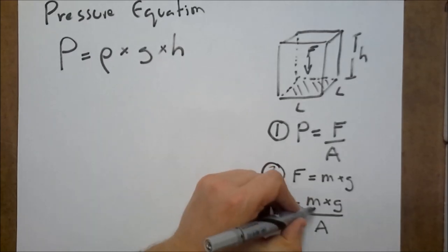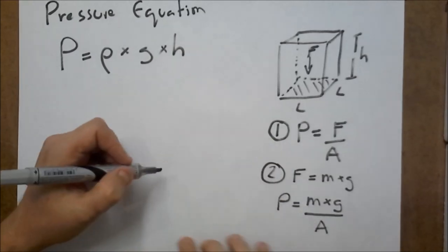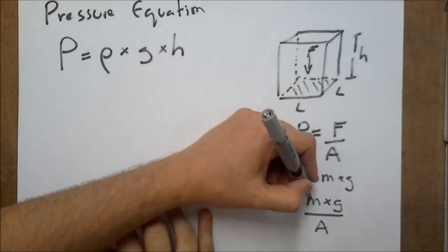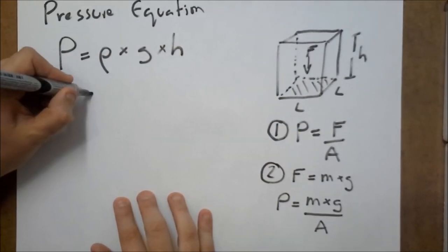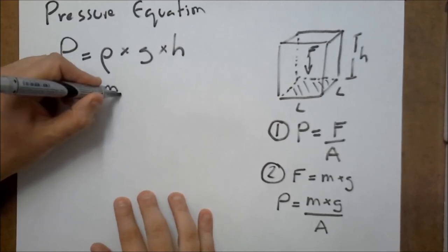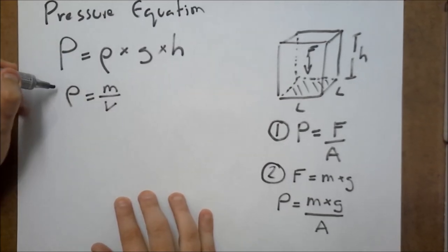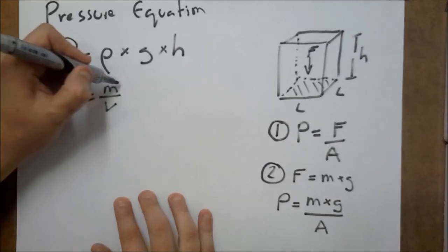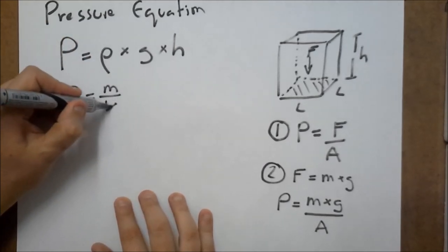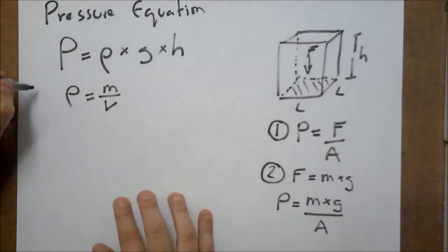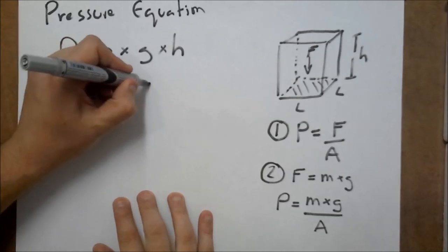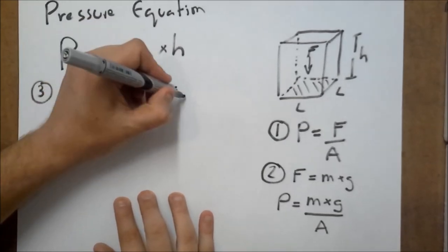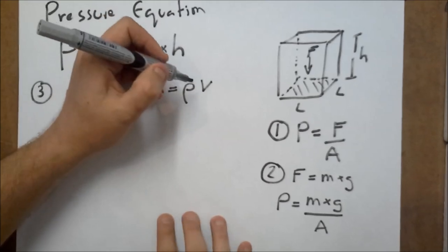Now, what about m and a? Well, m, okay, rho is equal to mass divided by volume. So, rho, that's the density, is equal to the mass divided by the volume. We're going to rearrange this equation. So, this will be our third equation. We're going to rearrange and make m the subject. We find that m equals rho times by v.